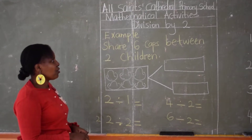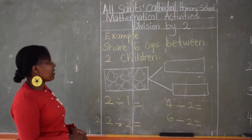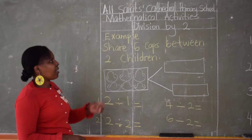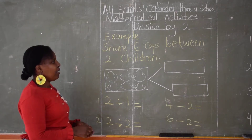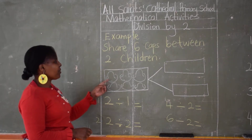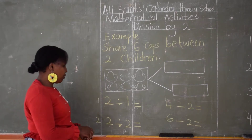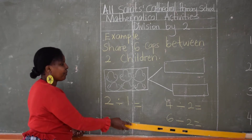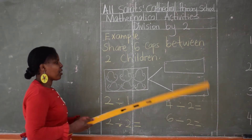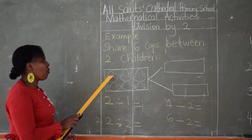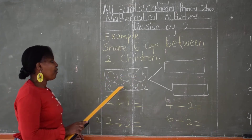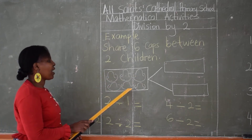I'll go straight to our first example. Share six caps between two children. Here I have my caps. Can we count together? Let us try and count. We have one, two, three, four, five, six.